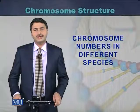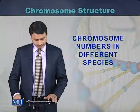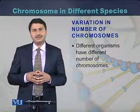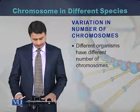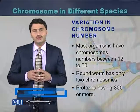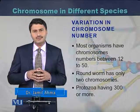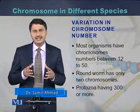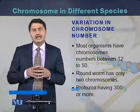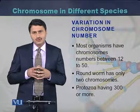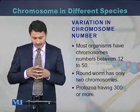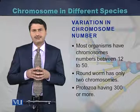Different organisms have different numbers of chromosomes. Most organisms have chromosome numbers between 12 to 50, but it can vary species to species. For example, roundworms have just two chromosomes, while in the case of protozoans they have more than 300 chromosomes.